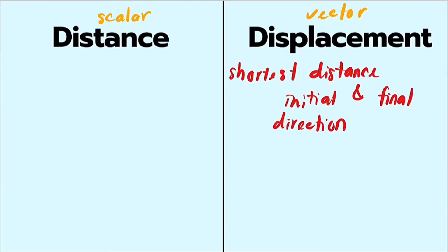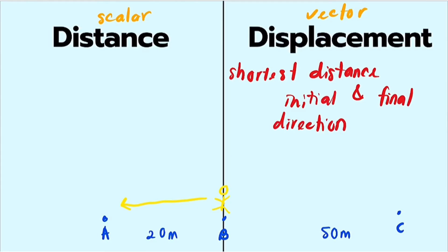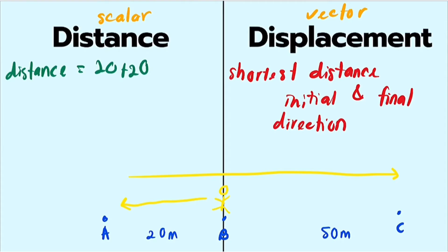To make the difference very clear, here is a simple example. Let's say we have three points: A, B, and C, with specific distances between them. We are a person at point B, traveling to A and then all the way to C. If the question asks for distance, you just sum up the distance traveled: 20 plus 20 plus 50, giving a distance of 90 meters.